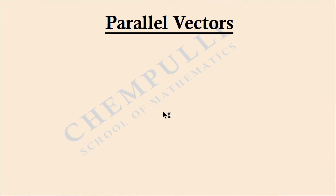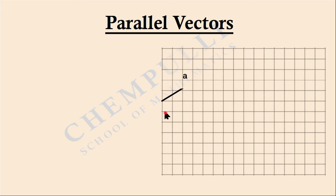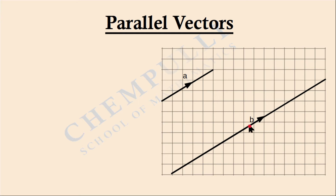Today we are going to learn about parallel vectors. Here there are two vectors, vector A and vector B. From this diagram we will get the idea that these two vectors, vector A and vector B, are parallel.